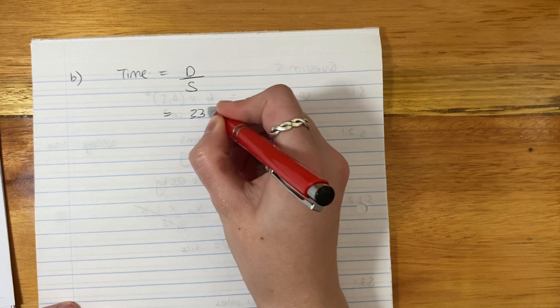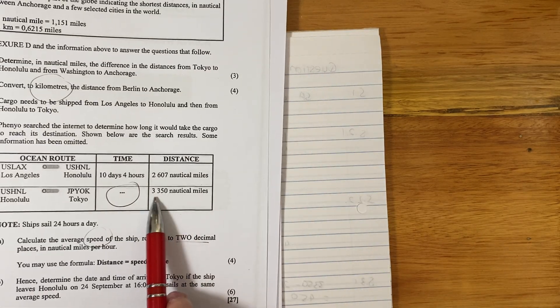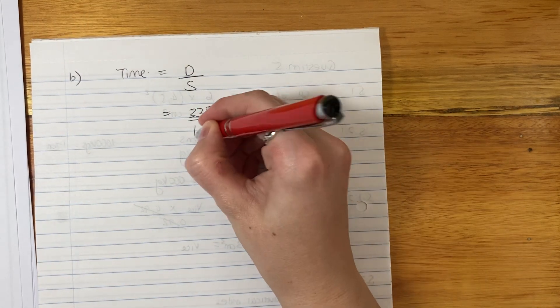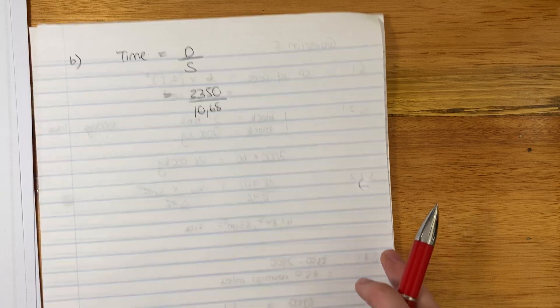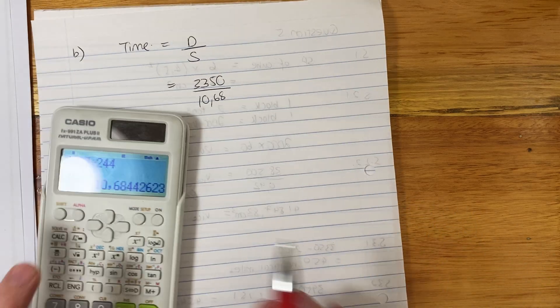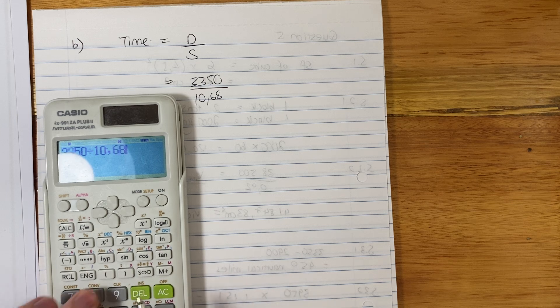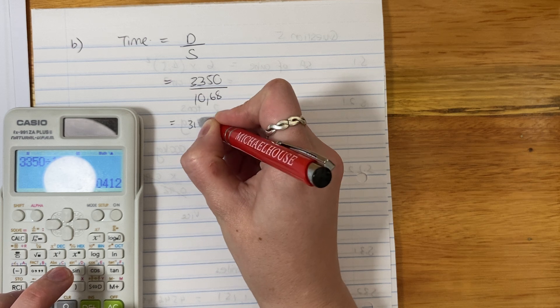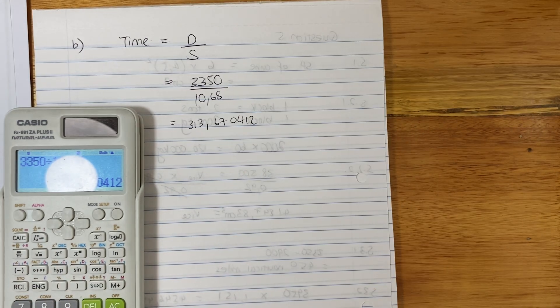So our distance here is slightly different. It's not the 2607. It's the 3350. So we have that there. What is my speed? Well, we know my speed is this 10,68. Where do we get that from? Over there. So we have that there. Wonderful. Let's put this into our calculator. 3350 divided by 10,68. It is 313,670412. That's great.